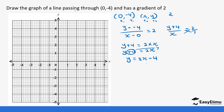Using this equation we can get any points on the line. We already have the first point where x = 0, giving us (0, -4). We can pick another point where x = 2: y = 2(2) - 4 = 4 - 4 = 0. So the second point is (2, 0).